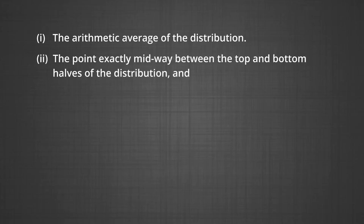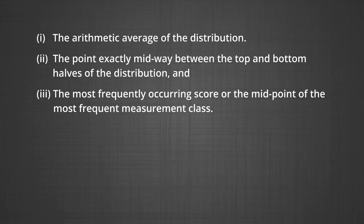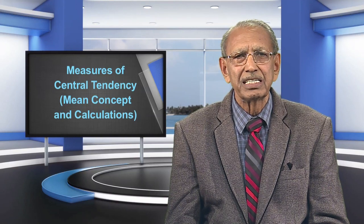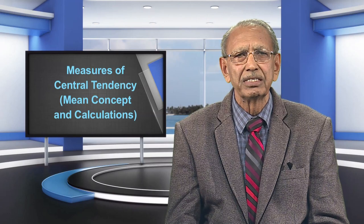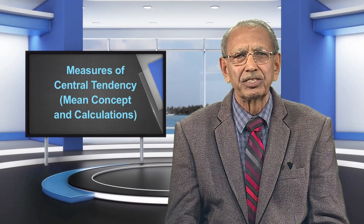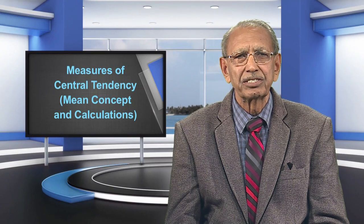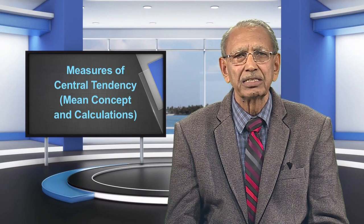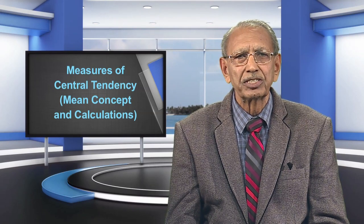Number one, the arithmetic average of the distribution. Number two, the point exactly midway between the top and the bottom halves of the distribution. And number three, the most frequently occurring score or the midpoint of the most frequent measurement class. The first leads to the measure known as the average or the mean. The second leads to the median. The third is known as mode. All are known as measures of central tendency.